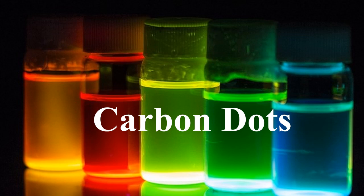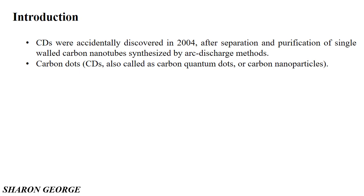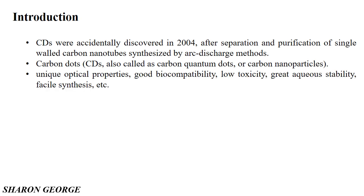Hello everyone, welcome back to another video tutorial. Today I'm going to share some information about carbon dots, their unique properties, applications, etc. Carbon dots were discovered in 2004, accidentally discovered during the separation and purification of carbon nanotubes. Carbon dots are also called carbon quantum dots or carbon nanoparticles. They have unique optical properties, good biocompatibility, low toxicity, and great chemical stability, which make carbon dots a promising candidate in different applications like biomedical, energy, and imaging.